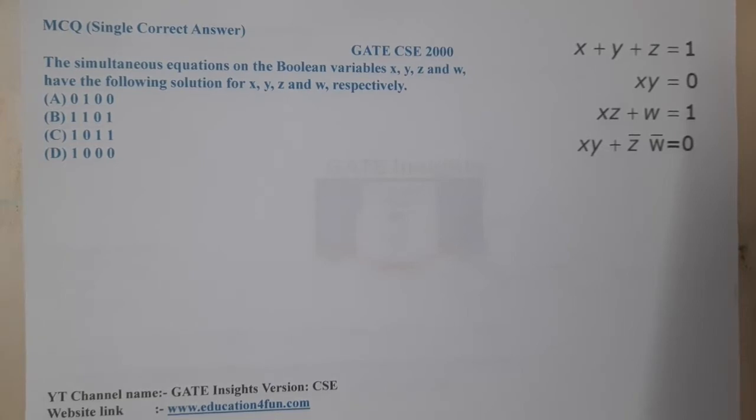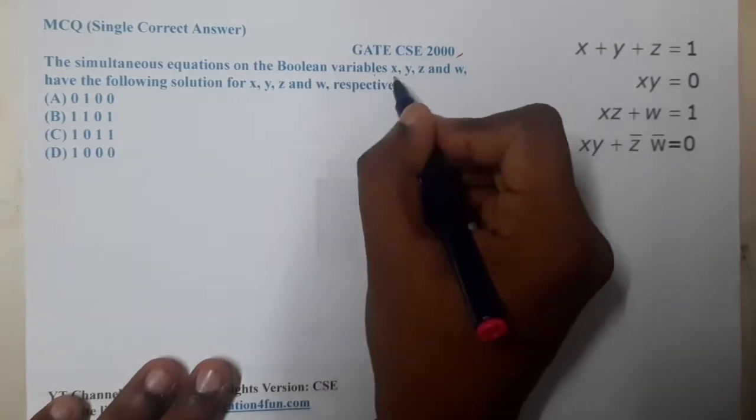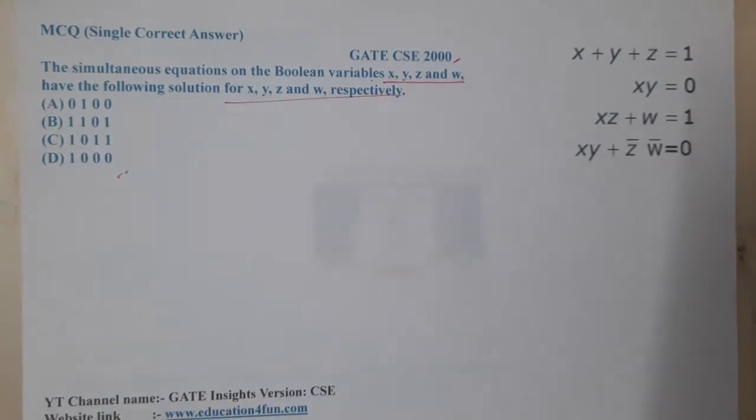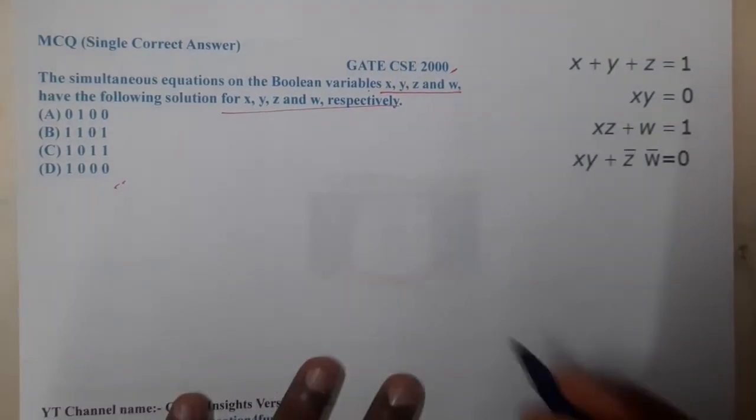The question is: the simultaneous equations on Boolean variables x, y, z, and w have the following solution respectively. We are going to check which of the following are true for these particular equations.